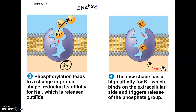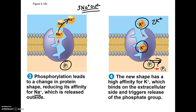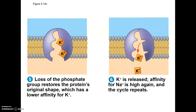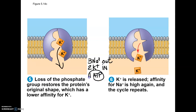Three sodium ions have now been pumped out of the cell. The new shape is attracted to potassium, but only two potassiums bind. When they bind, that changes the protein's shape slightly so the phosphate is no longer attracted and breaks off. When the phosphate leaves, the protein snaps back to its original shape, which is not attracted to potassium, so the potassiums are dropped off inside. In summary: three sodiums are pumped out, two potassiums are pumped in against their concentration gradients, and it requires one ATP.